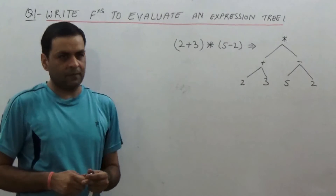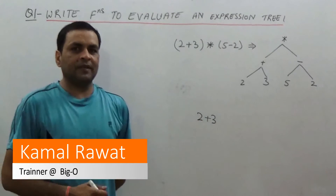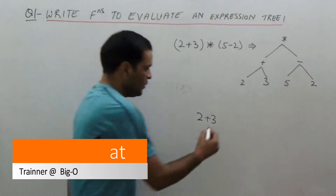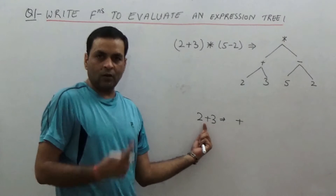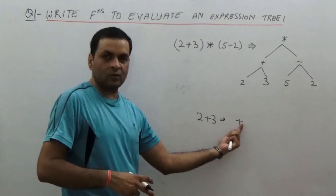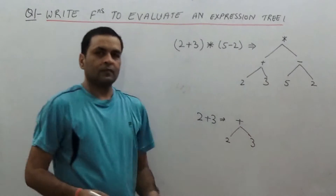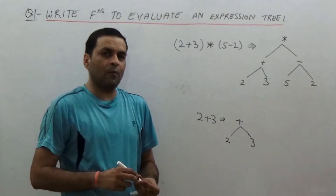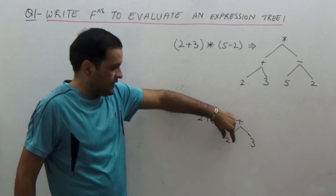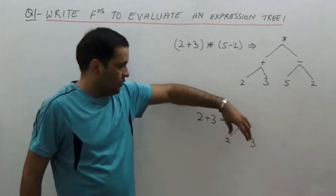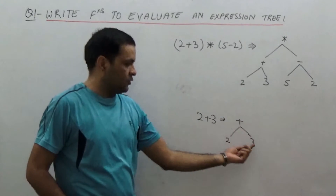Let us see what is an expression tree. If I am given an expression, say 2 plus 3, then the expression tree for this has the operator as the root. So plus is the operator, and 2 and 3 are the operands, which are the leaves. The plus operator is at the root, and the left child and right child give us the answer: 2 plus 3.